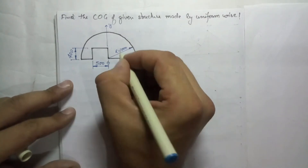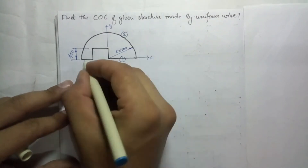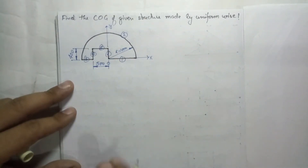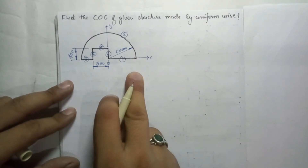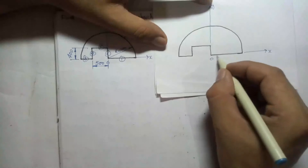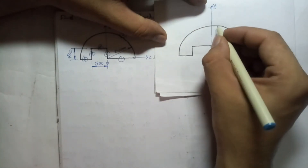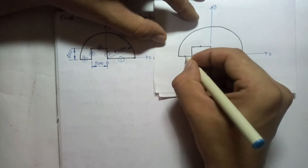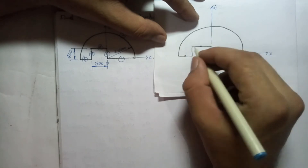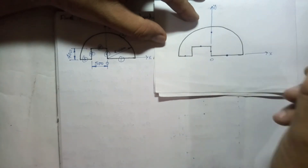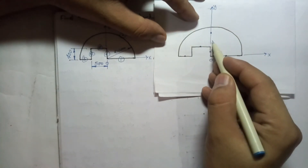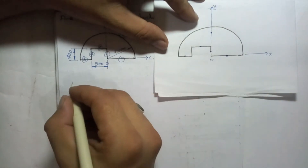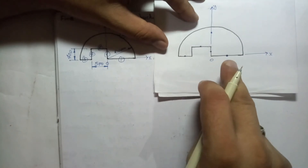There are 6 wires combined together to make the given structure. For straight wires, the centroid lies at the midpoint directly. But when there is a curved part — a semicircle — the center of gravity lies outside the object. There is a specific formula for that, which we will use. First, we find the length and the x, y coordinates for each wire segment.